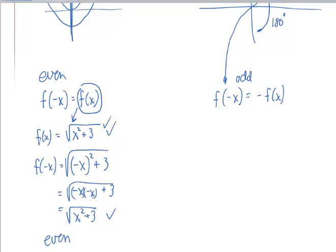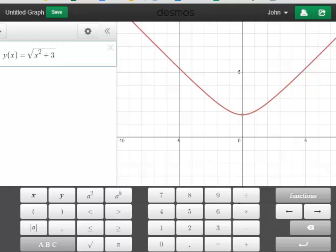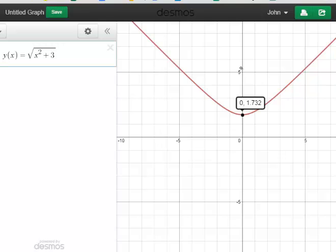Now, you may not believe me, but if I put the function into the graphing calculator, and the graphing calculator is Desmos, you can see that upon plotting it, the function is symmetric about the y-axis. So, graphically proving that it's an even function.